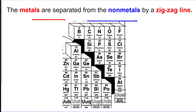The metals are separated from the non-metals by a zigzag line on the periodic table right here, and it's always located in the same spot. Sometimes you'll see it called a stair-step pattern, but that's going to be your separation. So anywhere to the left of it are the metals and anywhere to the right of it are the non-metals.